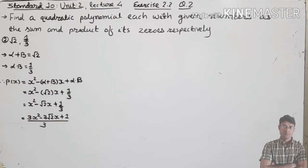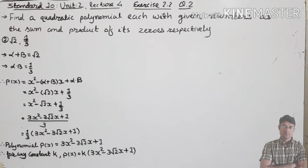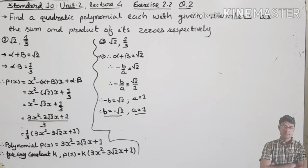To simplify, we take LCM of 3. Terms without 3 in the denominator get multiplied by 3. The polynomial becomes 1/3 in bracket (3x squared minus 3 root 2 x plus 1). The actual polynomial is p(x) equals 3x squared minus 3 root 2 x plus 1, where 1/3 is the common factor. For any constant k, p(x) equals k in bracket (3x squared minus 3 root 2 x plus 1).